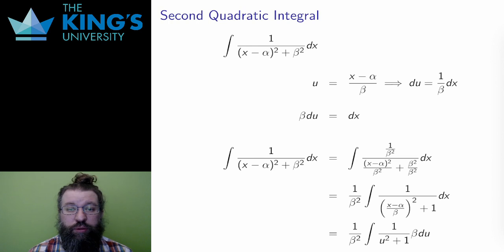Finally, I have one more integral to do with quadratics in the denominator. Here, instead of having a nice 2x plus a in the numerator to make a substitution work, I'm just going to have 1 in the numerator. For the denominator, I'm going to write the quadratic in the form x minus alpha squared plus beta squared. This is sometimes called the vertex form, and is what you get after completing the square for a quadratic.